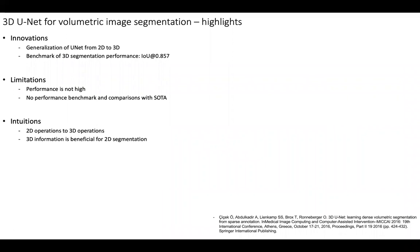This paper is published in MICCAI 2016. The first innovation of this paper is that it generalizes the U-Net from 2D image segmentation to 3D image segmentation. It also benchmarks the performance of 3D segmentation and achieves the performance of IOU 0.857.